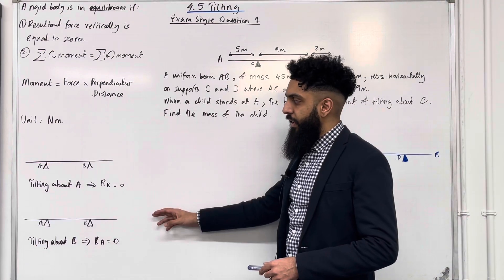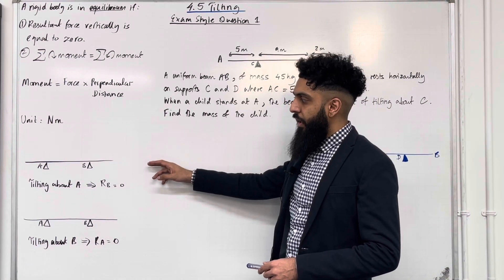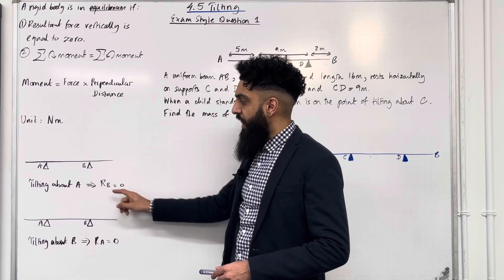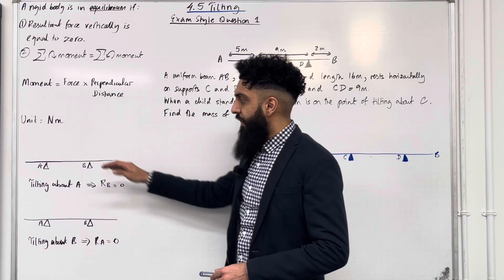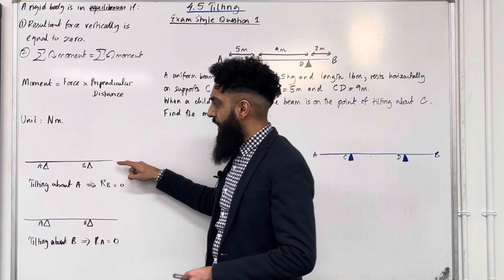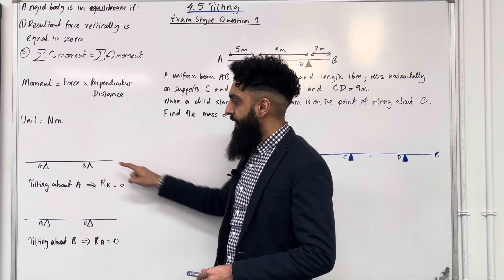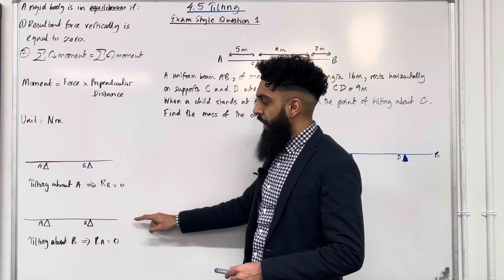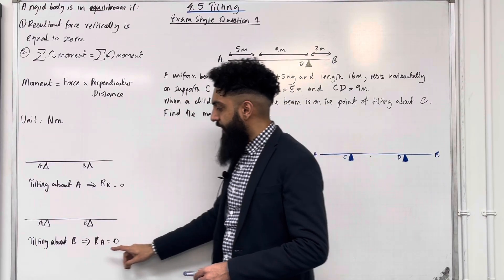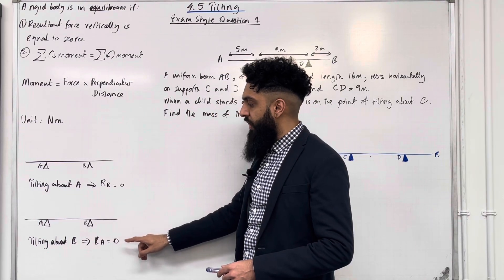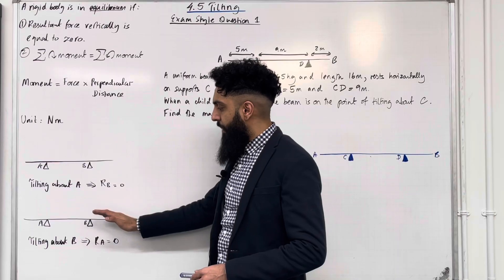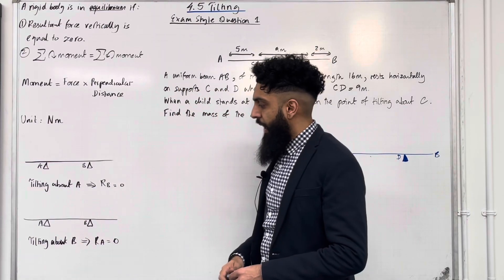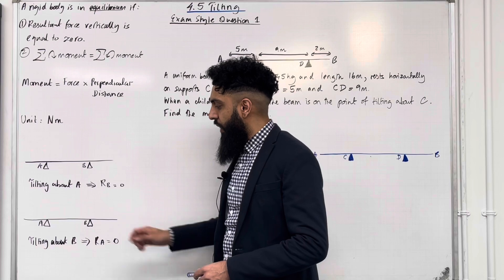Consider the following rigid bodies. Tilting about A implies that the normal reaction at B is equal to 0 — the body is not in contact with the support at B. Tilting about B implies that the normal reaction at A is equal to 0 — the body is not in contact with the support at A.